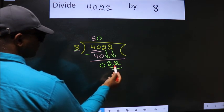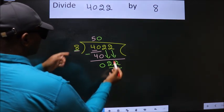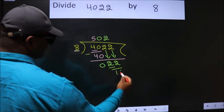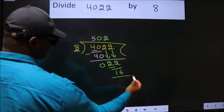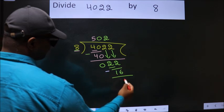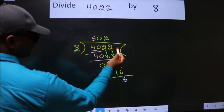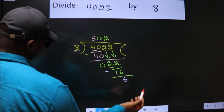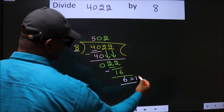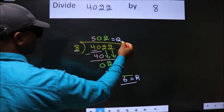A number close to 22 in the 8 table is 8 twos are 16. Now we subtract. We get 6. No more numbers to bring down, so we stop here. This is our remainder. This is our quotient.